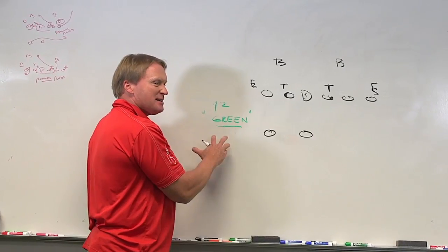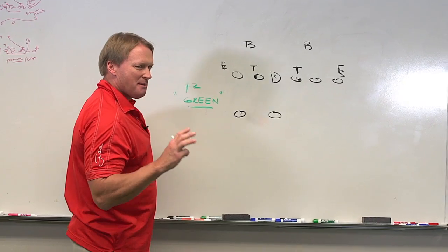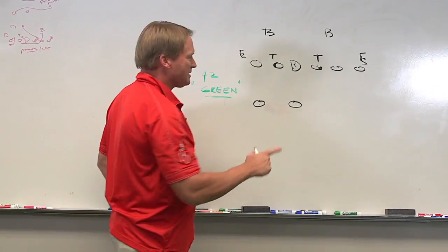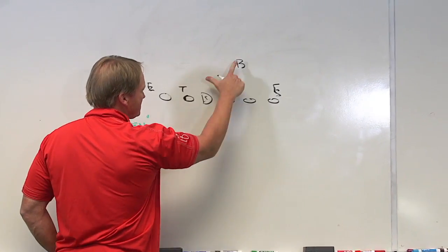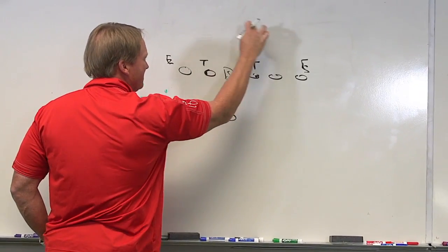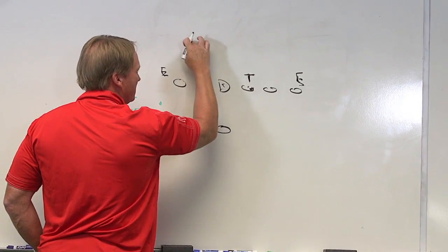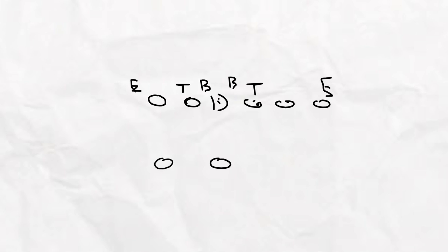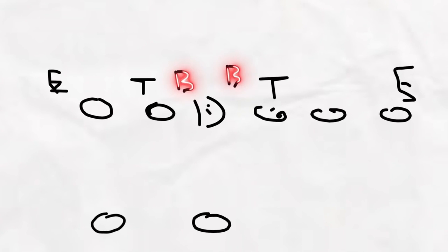What really makes the Vikings special is Mike Zimmer's double A package. What he does is he takes his two inside linebackers, Barr and Kendricks, and instead of lining them up in a normal alignment, he puts them in the A gap between the center and the guard.